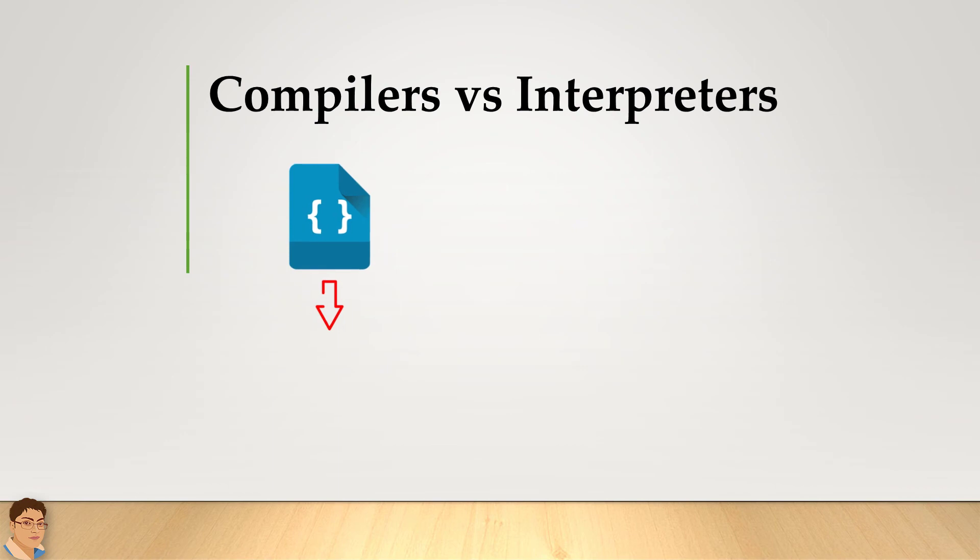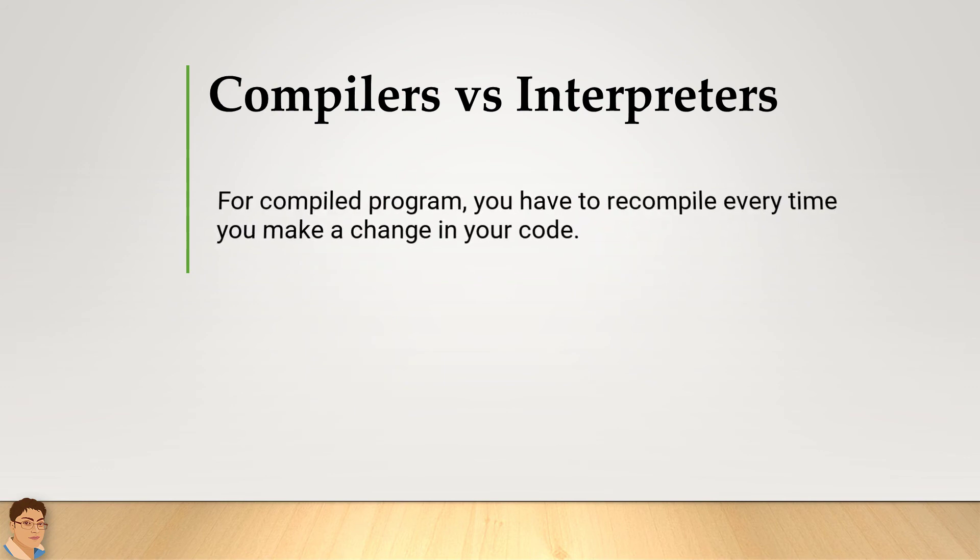Once a program is compiled, its source code is no longer required for running the code. For interpreted programs, however, the source code is needed to run the program every time. One downside for compiled programs is that you have to recompile every time you make a change in your code.